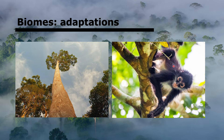The spider monkey has long arms and legs to climb, flexible shoulders to allow swinging between trees, a long tail that can grip onto branches, and they breed all year round as there is a constant supply of food. You don't need to memorize all of these, but understand that animals and plants are adapted to their biome through convergent evolution.